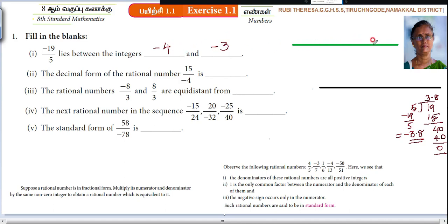So this lies between minus 4 and minus 3. Let us check with the help of number line. Number line, we will check. 0, 1. Here, minus 1, minus 2, minus 3, minus 4. That means what? Here,